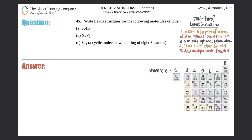Number 45: write Lewis structures for the following molecules or ions — we have a, b, and c. We're writing Lewis structures, which always come from covalent molecules — two non-metals or metalloids acting as non-metals that share electrons.